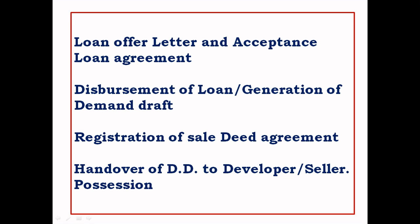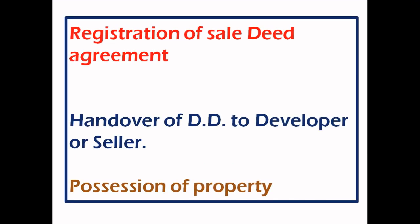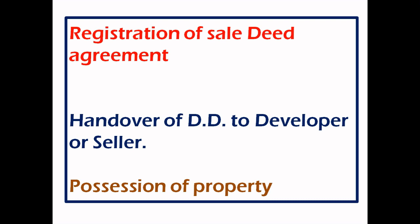This is the disbursement of the loan and the generation of a demand draft. When the loan agreement is complete, we have a total disbursement. The demand draft is generated. When we have the property, we register for the sale date agreement. We hand over the demand draft (DD) to the developer or seller. Once the sale agreement is registered, the property is handed over and we take possession of the property.